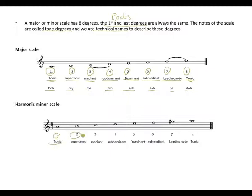For the harmonic minor scale: the first degree is tonic, second degree supertonic, third degree mediant, fourth is subdominant, fifth dominant, sixth submediant, and the seventh is your leading note — which is raised — resolving to the tonic again.